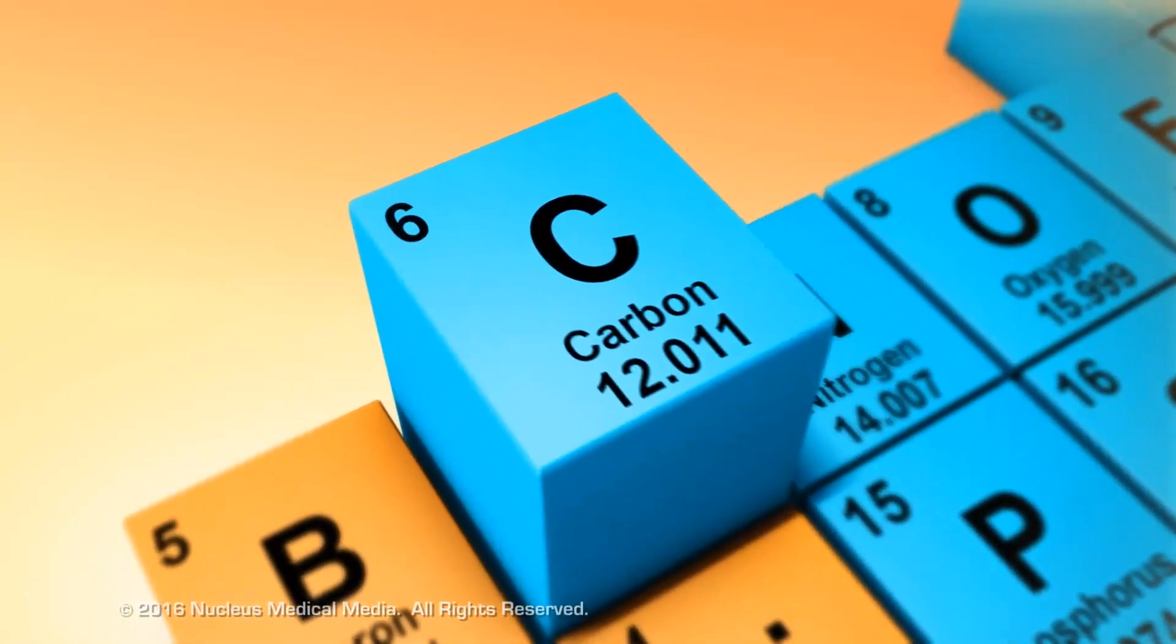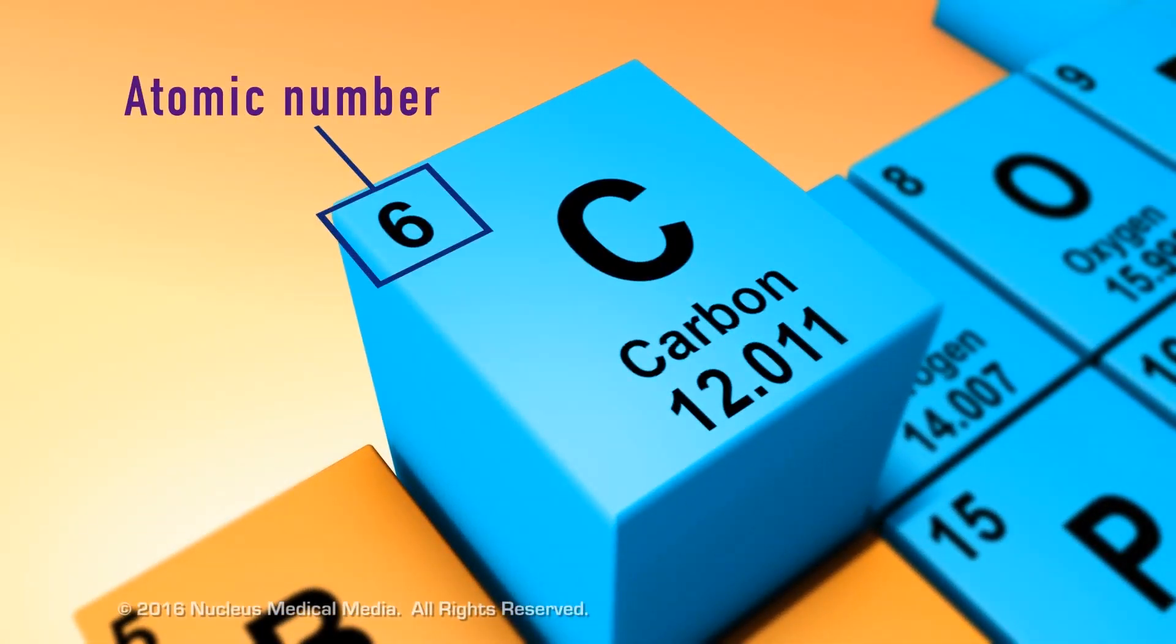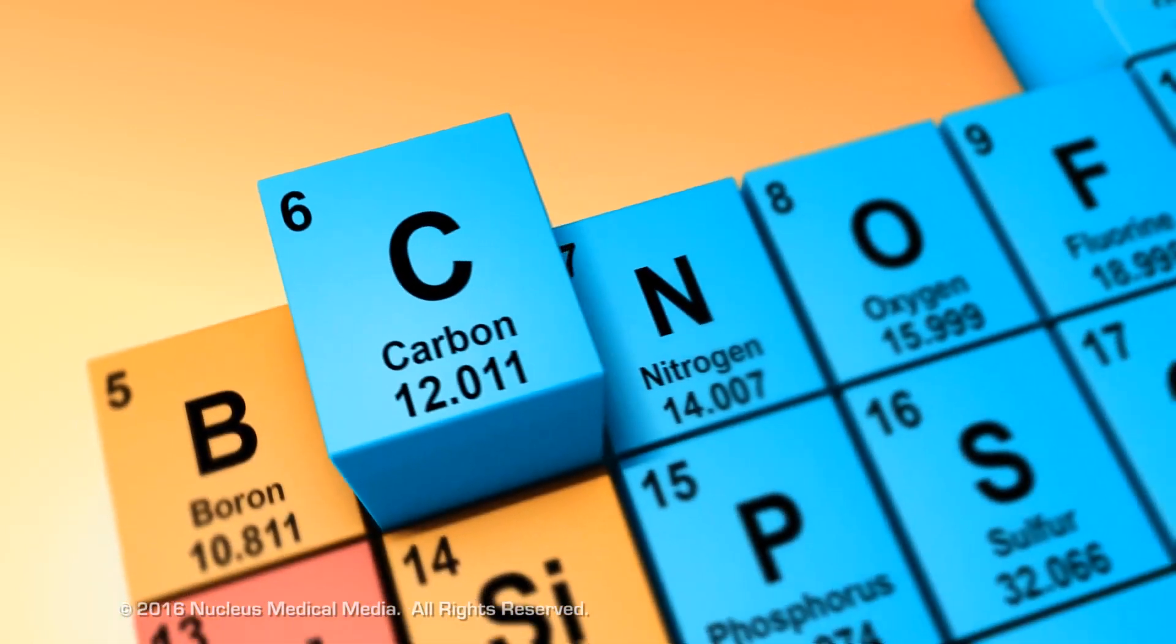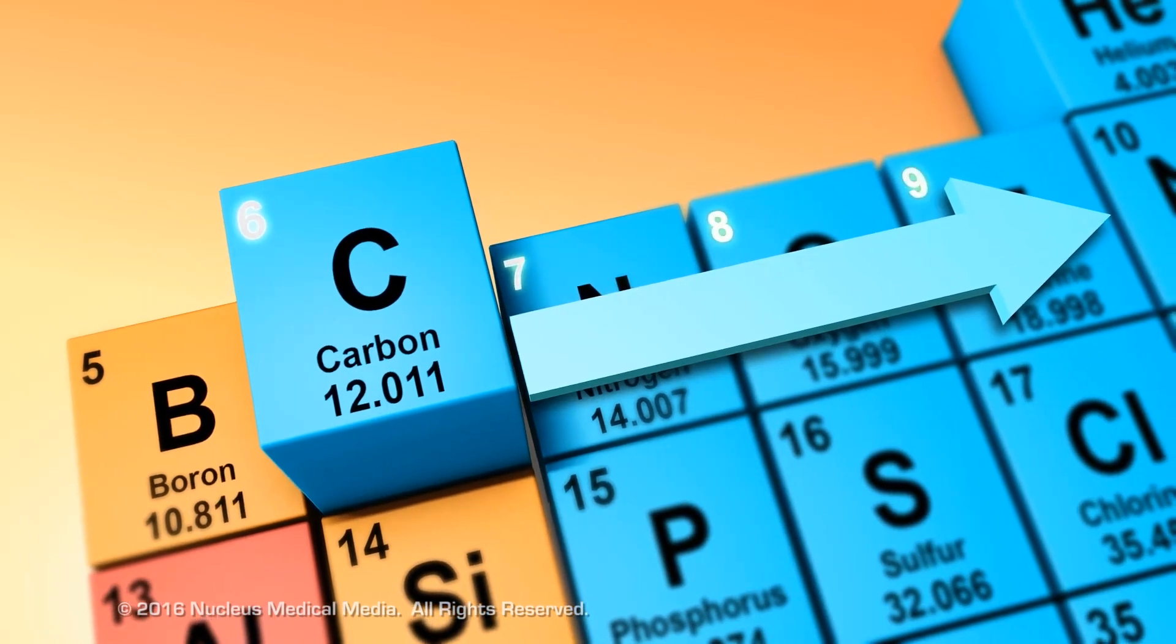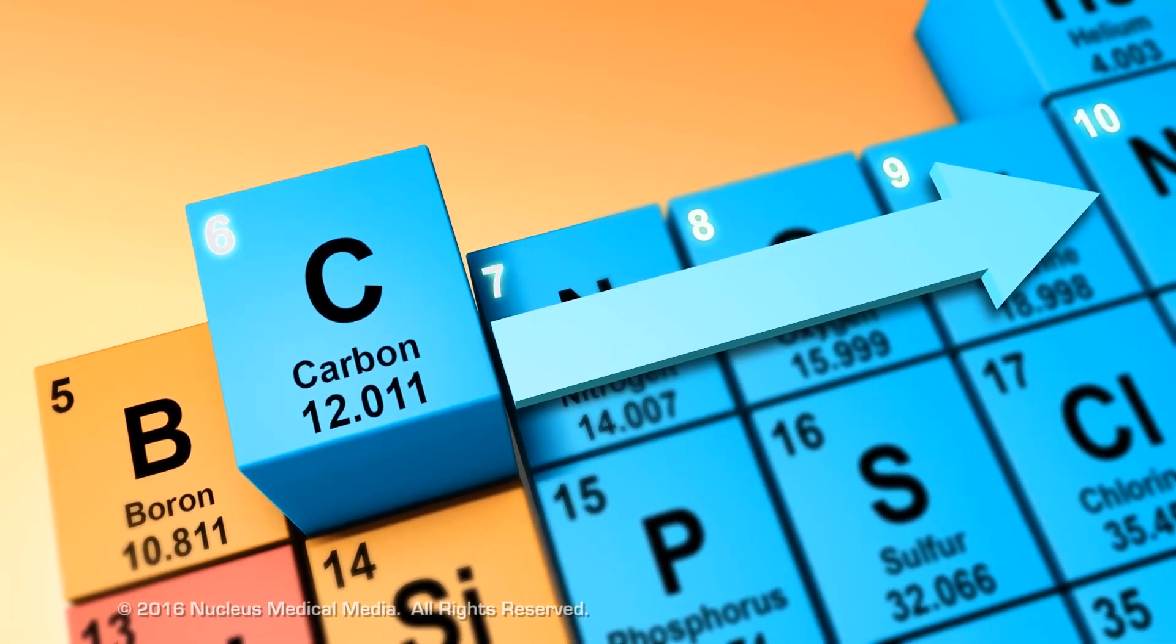The smaller number next to each element's symbol represents the atomic number. The atomic number increases by one as you go from left to right across each period.